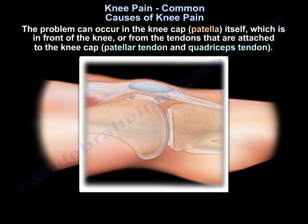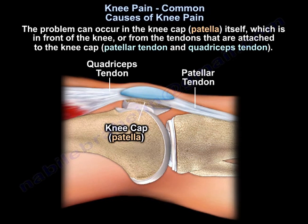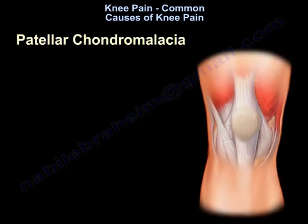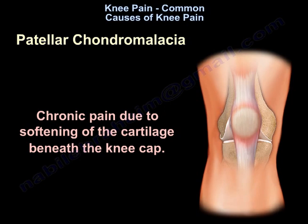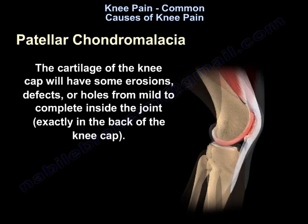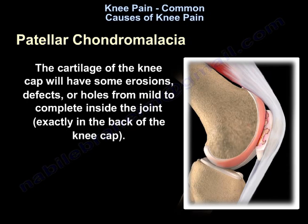The problem can occur in the kneecap itself, which is called the patella, located in front of the knee, or from the tendons attached to the kneecap — the patellar tendon and the quadriceps tendon. One of the most common problems of the kneecap is called patellar chondromalacia, which is chronic pain due to softening of the cartilage beneath the kneecap. The cartilage of the kneecap will have some erosions, defects or holes from mild to complete inside the joint, exactly at the back of the kneecap.